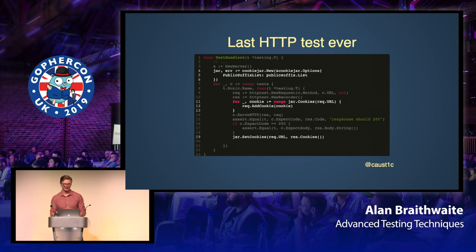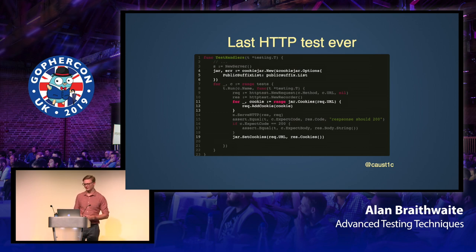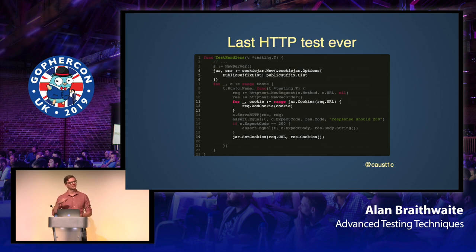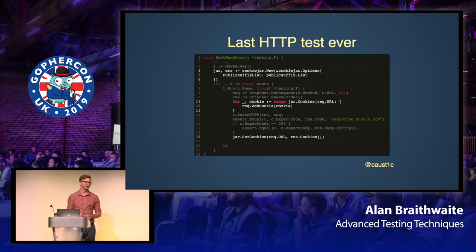We can handle state. For simple things like sessions, we can instantiate a cookie jar — HTTP cookies are how you manage sessions in browser-based authentication. Before each request, we take every cookie in the cookie jar and add it to the request. After we get the response, if it has any Set-Cookie headers, we add those cookies to the jar so that the next request has the state necessary to communicate that you're authenticated.